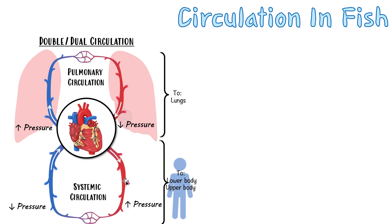The blood travels down into smaller arteries and eventually into capillaries. The capillaries are the area where oxygen and nutrients leave to the surrounding cells that need them. The cells use this oxygen in cellular respiration to make ATP — the energy currency of the body — and produce byproducts like carbon dioxide that are sent back into the capillary to be taken away.